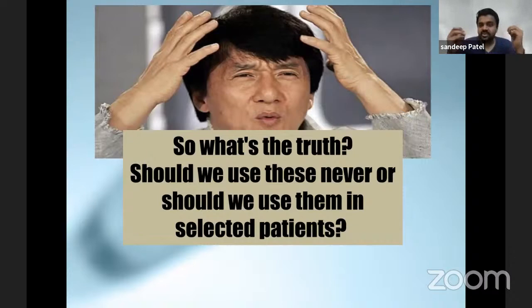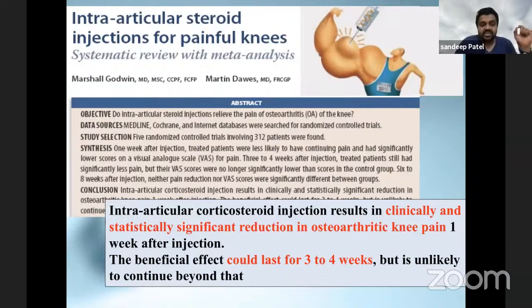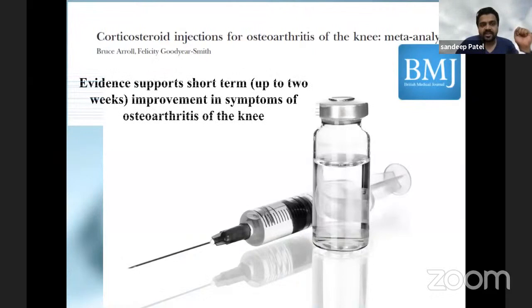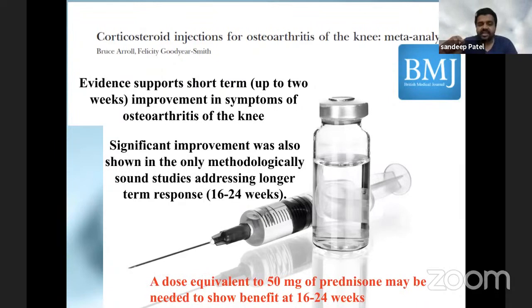So a lot of confusion - what's the truth? Should we use this never, or should we use them in selected patients? To understand that, let's see what the clinical studies say. In 1954, the clinical studies showed 80% sustained relief. Systematic review and meta-analysis showed clinically significant reduction in osteoarthritis knee pain one week after injection, but it could only last for up to three to four weeks and was unlikely to continue beyond that. The BMJ article and other meta-analyses showed evidence supporting short-term, that is up to two weeks, improvement in symptoms of osteoarthritis. A dose equivalent of 50 milligram prednisolone may be what is required to show the benefit.